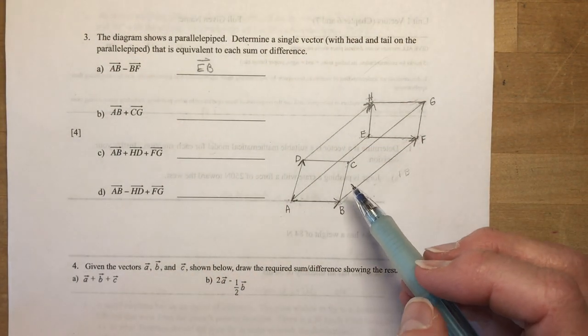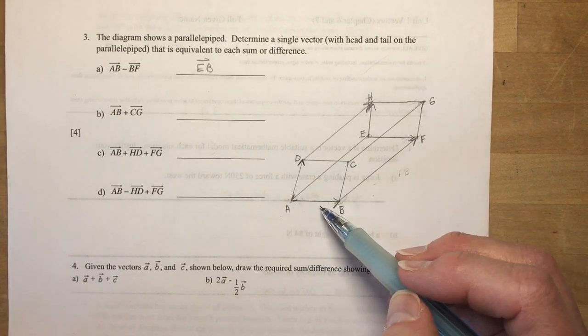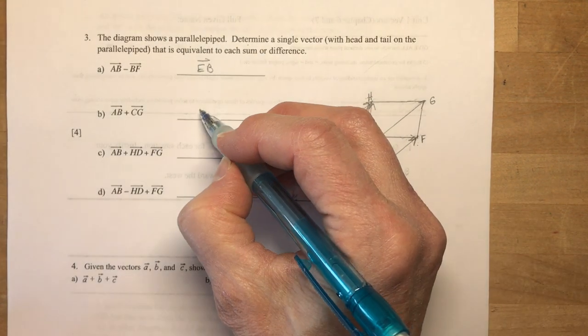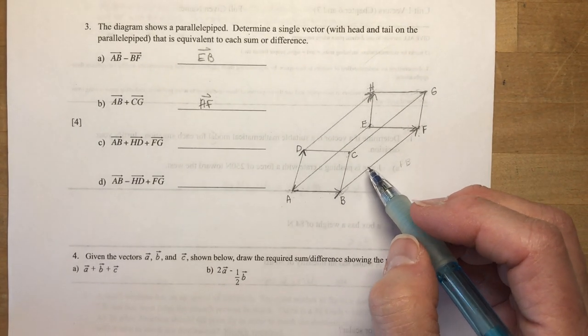AB plus CG. AB, CG is the same as BF. So AB plus CG is the same as AF. Sometimes these seem more confusing than they really are, right?